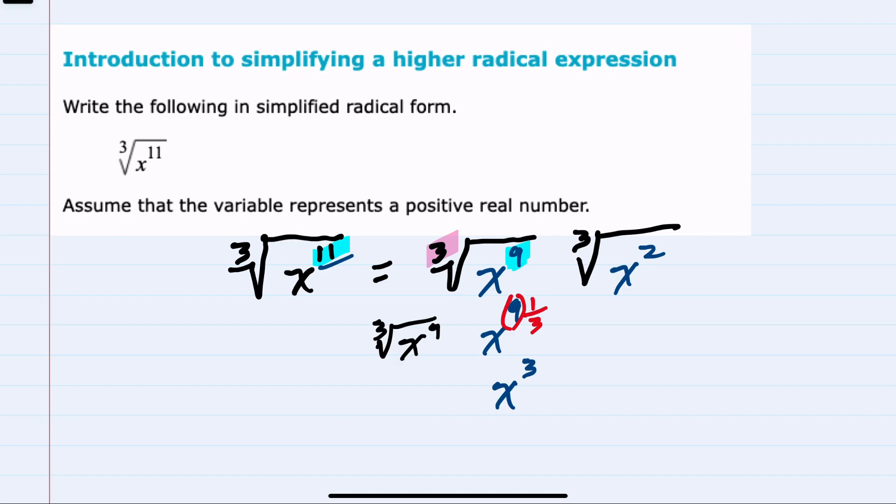Another way of thinking of this first part being simplified in this way is that x to the 9th is x to the 3rd, then raised to the 3rd again. And here the cube root and the outer 3rd cancel, leaving me with just the x to the 3rd on the inside.